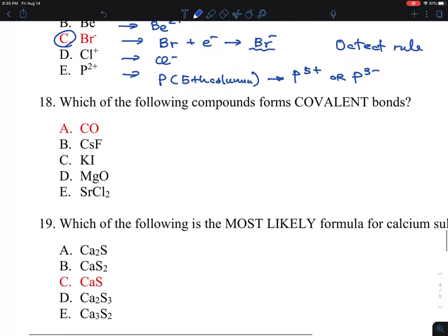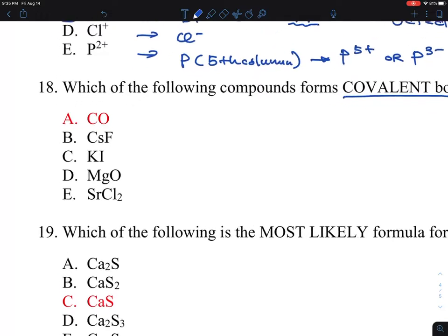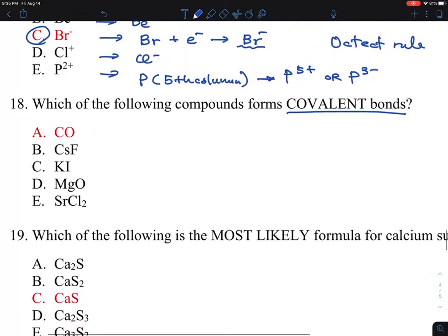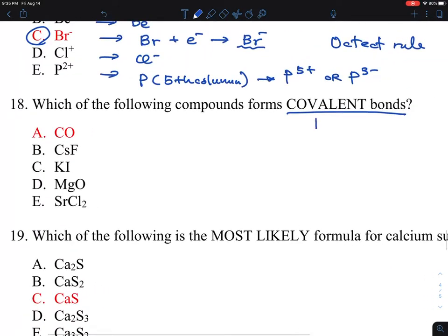Okay, so number 18 is, which of the following compounds forms a covalent bond? So you see this number of atoms, they form this bond, and then what matters is, the other way to answer this is, what's the opposite of covalent bond, which is ionic bonds.